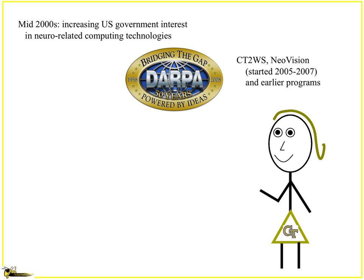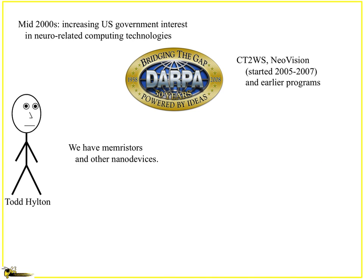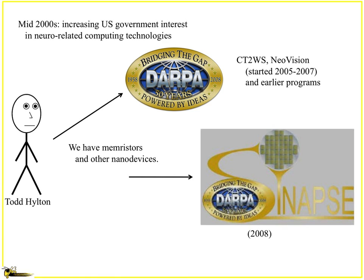Well, in the mid-2000s you had a lot of interesting interest in government spaces here, and DARPA being one of them. They'd had a bunch of different programs, CTWS, NeuroVision, and so forth. And then you ended up attracting neural nanodevice people like Todd Hilton, who was like, hey, I got memories of coming to DARPA and going, hey, I think we could actually do some neural stuff. Let's call that Synapse.